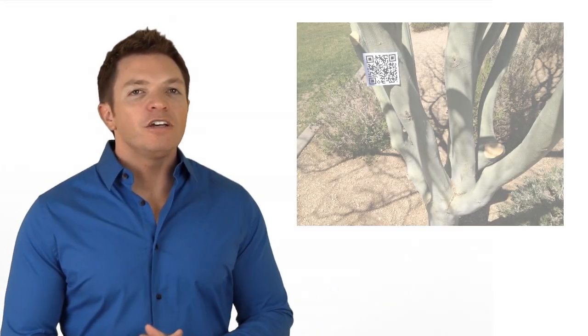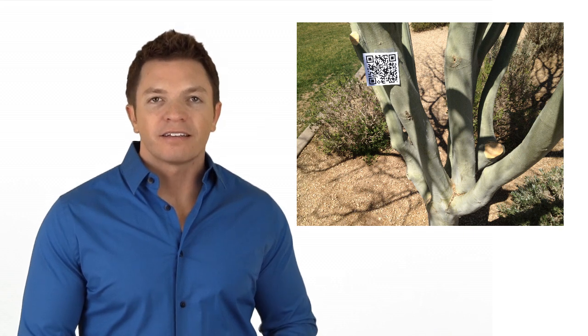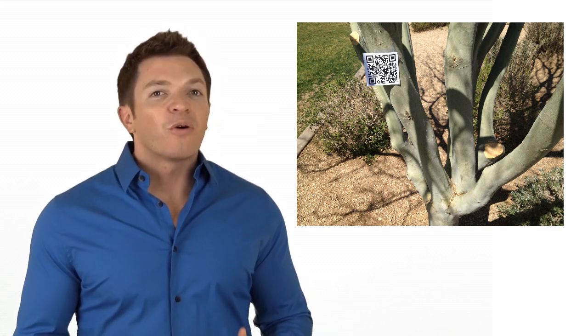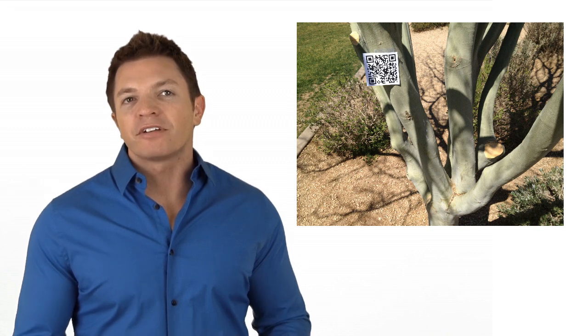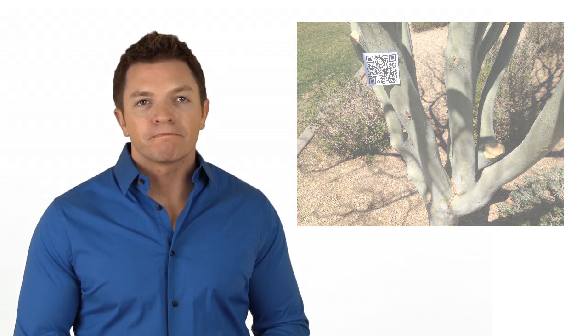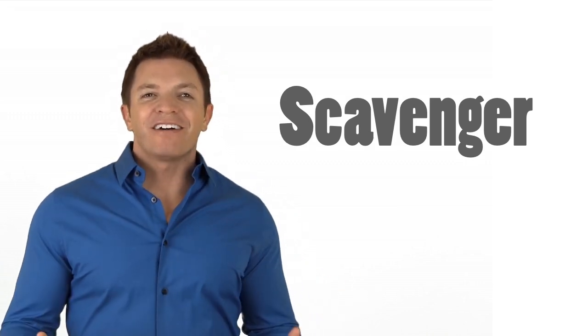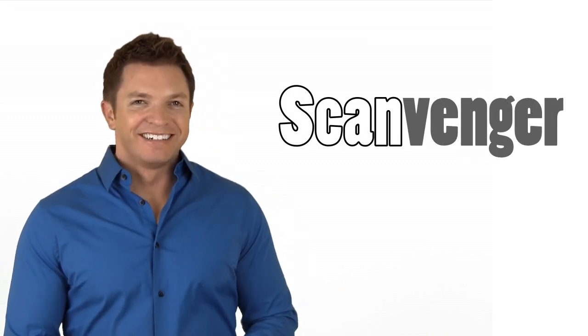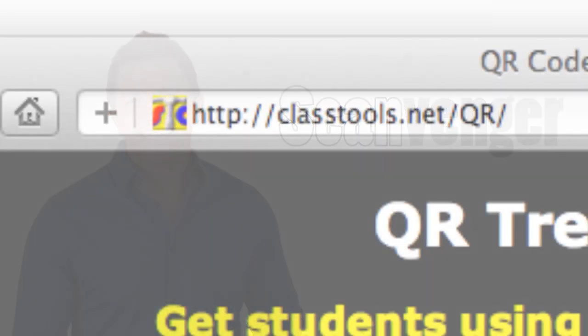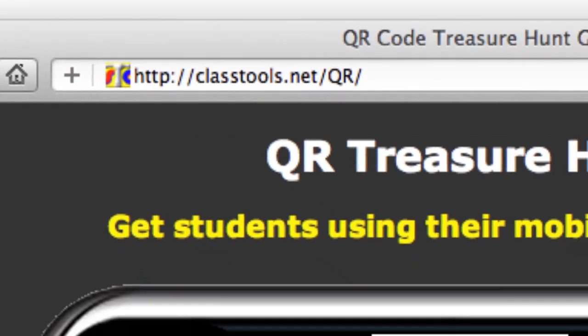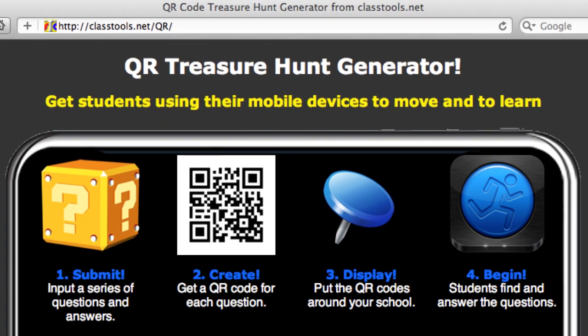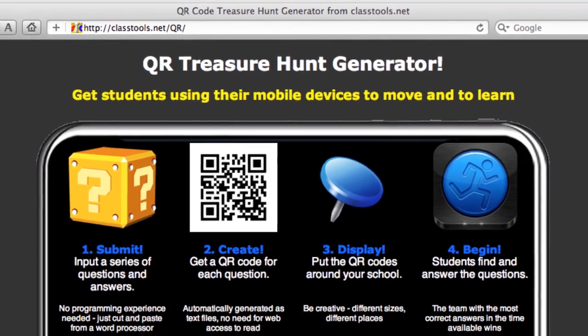Teachers are making field trips more meaningful by placing QR codes around the location or on objects. The codes can link to information, give instructions, or even ask students to submit observations through a Google form. While on a field trip or at school, it's easy to make a QR code scavenger hunt. Or you might pronounce it scavenger hunt. Classtools.net has a QR code treasure hunt generator designed for inputting a series of questions and getting a QR code for each.